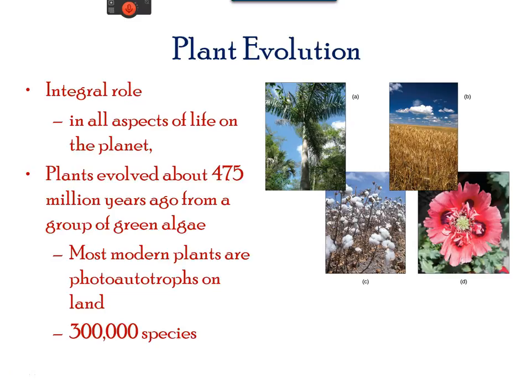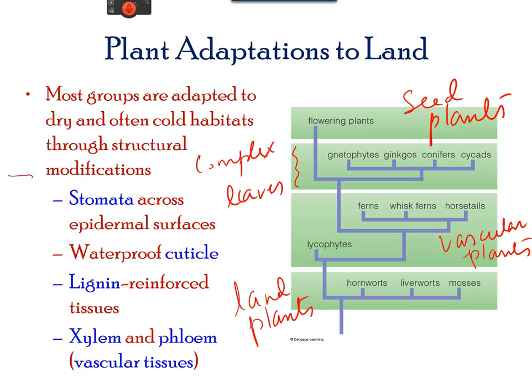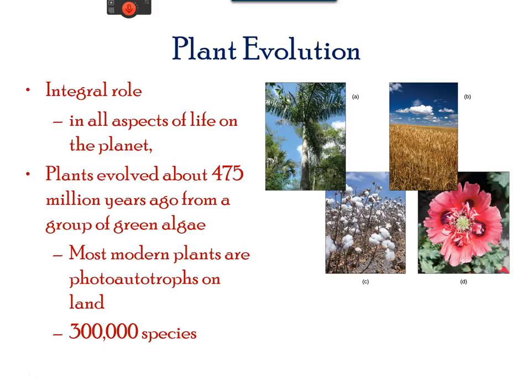Plants dominate the landscape and play an integral role in all aspects of life on the planet. They influence the climate, provide nutrition and medicinal compounds, and numerous byproducts used in human and animal populations. They evolved about 500 million years ago from primitive algae. There are more than 300,000 species of plants currently, and most of them are photo-autotrophs, meaning they can provide energy through photosynthesis.